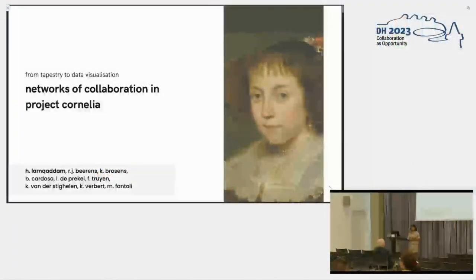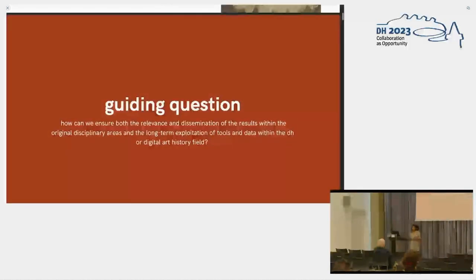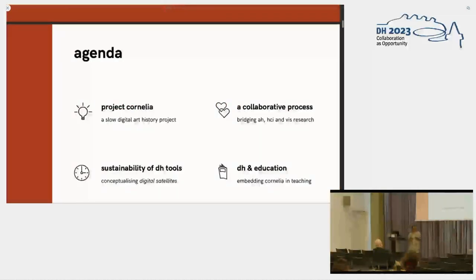The name of the talk is 'From Tapestry to Data Viz: Networks of Collaborations in Project Cornelia.' The guiding question behind this paper and talk is really about how we can ensure the relevance and dissemination of work in multiple disciplinary fields, doing collaborative work with people from multiple different disciplines. How can we ensure long-term usability, long-term usage, and sustainability of the tools that we develop?